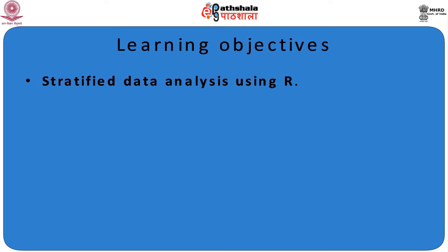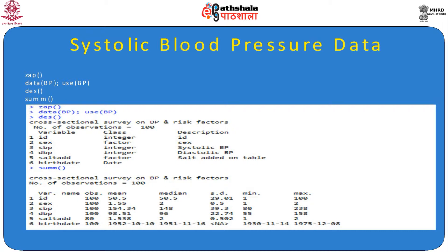The learning objective is to perform Stratified Data Analysis using the BP dataset on systolic blood pressure data. The blood pressure data is read using the function and the dataset BP is loaded. Using the dim() function, it shows that the total number of observations equals 100, and the variables are: ID, sex, SBP, DBP, salt added or not, and birth date.